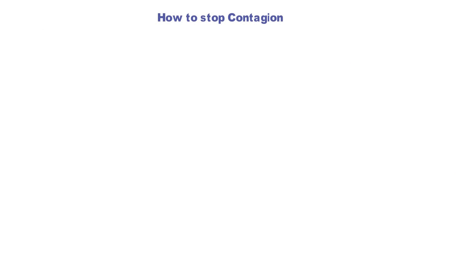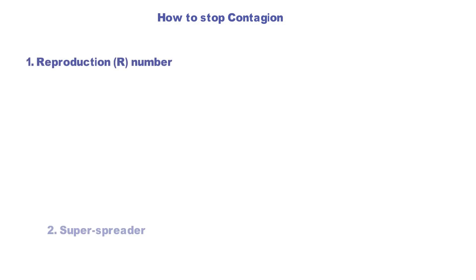Knowing why contagions stop is not enough. What we really want to know is how to make it stop. The good news is that nowadays we have found two key elements of contagions: the R number and super spreaders.